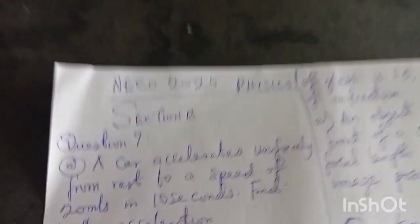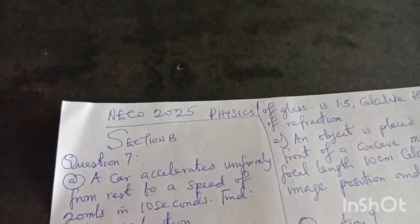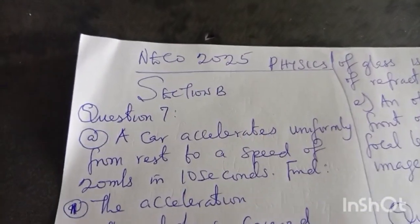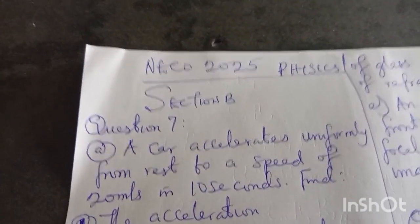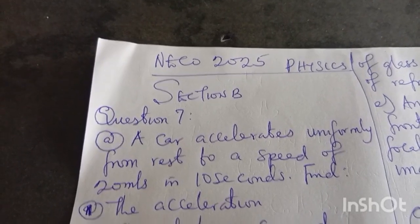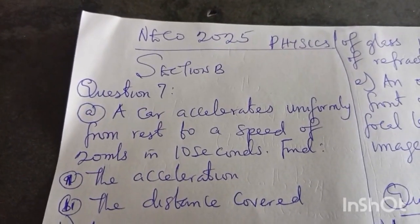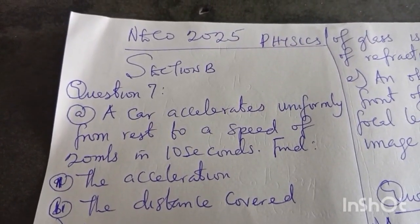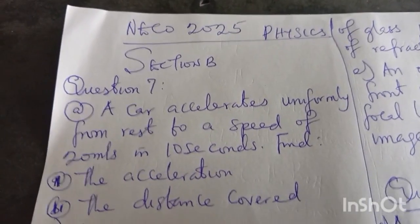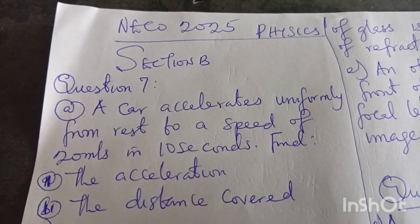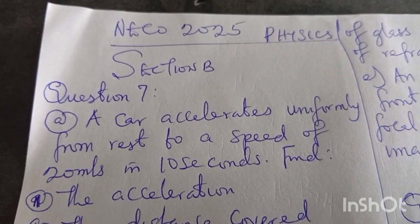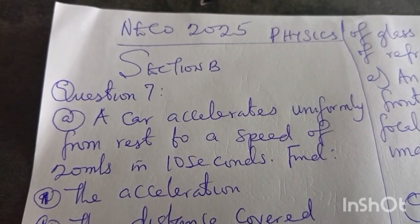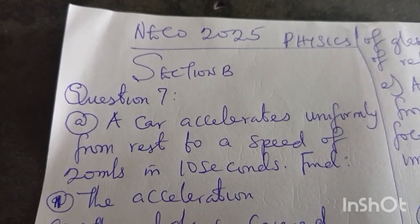Let's start solving question number seven. It says: a car accelerates uniformly. Please watch the video from beginning to end — it will not be too long so it won't be boring, and you'll be able to achieve what you need. Remember that all the information you see on your screen is watch-out information for your examination.